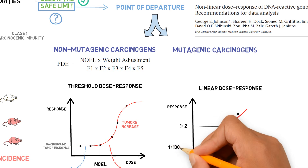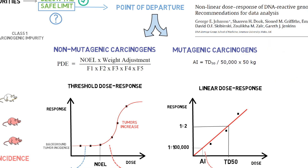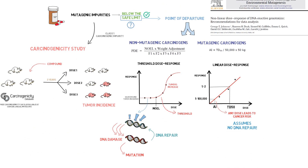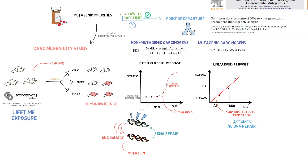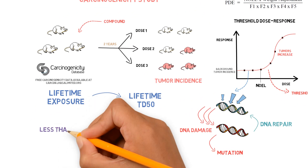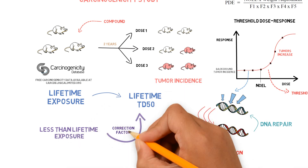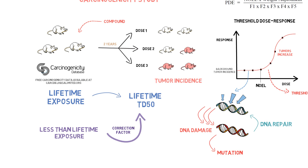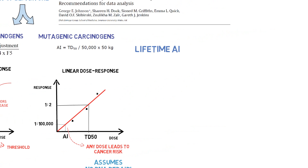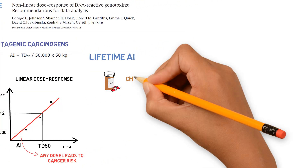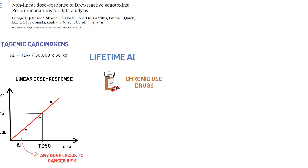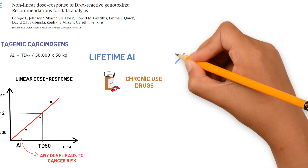ICH M7 describes that 1 in 100,000 is considered a negligible risk of cancer posed by mutagenic impurities present in drug products. However, in these studies, rodents are usually exposed for their lifetime to the compound, so the TD50 and AI refer to a lifetime exposure to that impurity. In studies when the rodents are exposed for less than their lifetime, factors are applied to estimate what the TD50 would be if they had been exposed for their lifetime. So this lifetime AI applies to impurities present in a drug used for a chronic disease, which will be taken for more than 10 years.